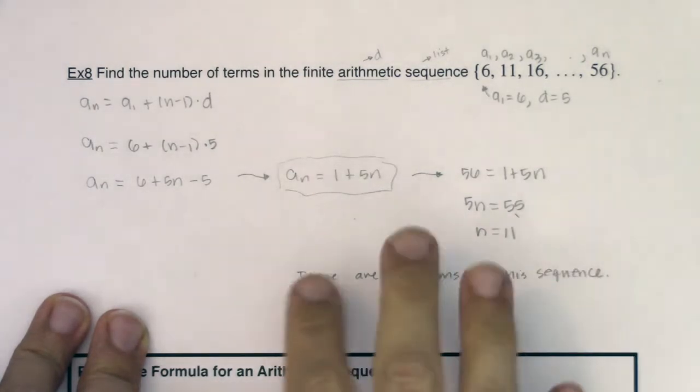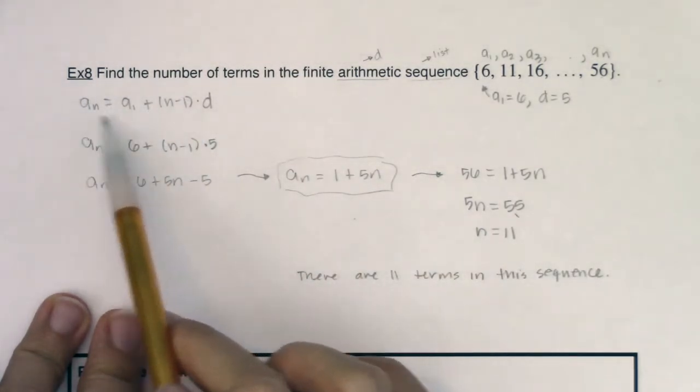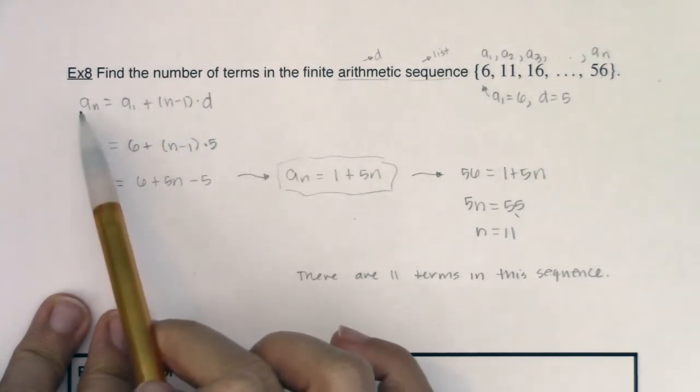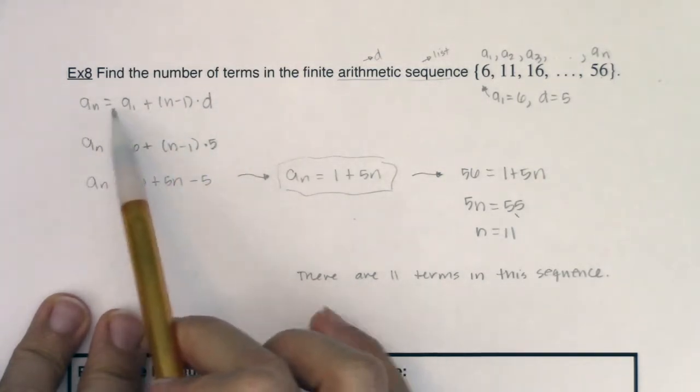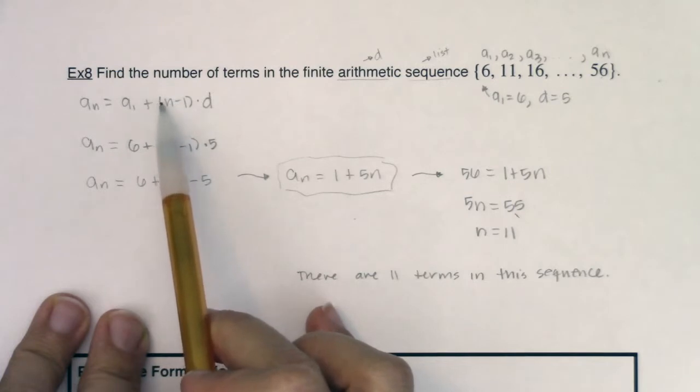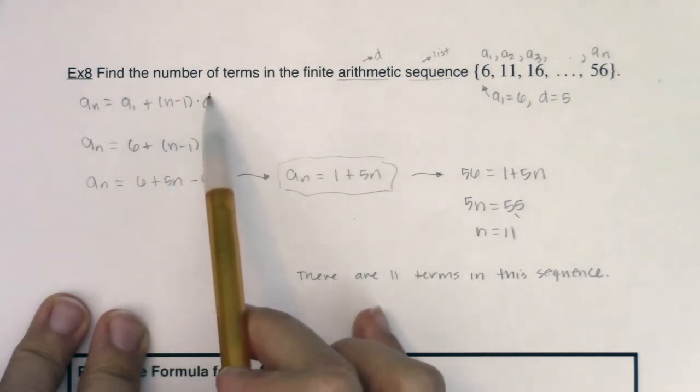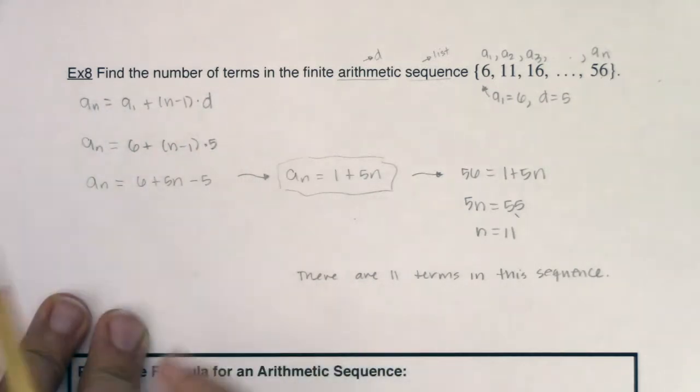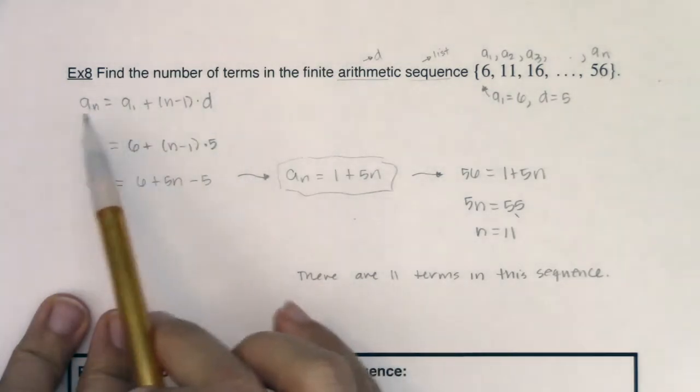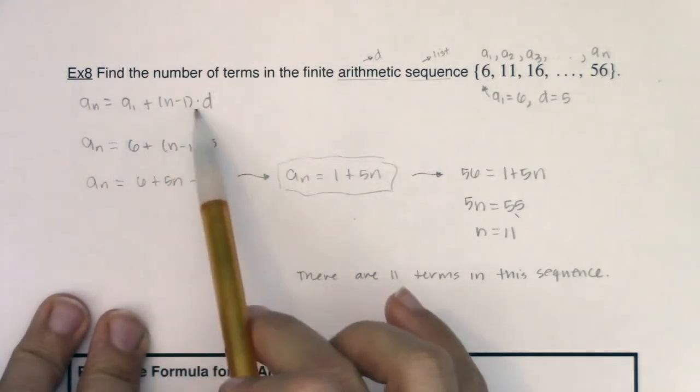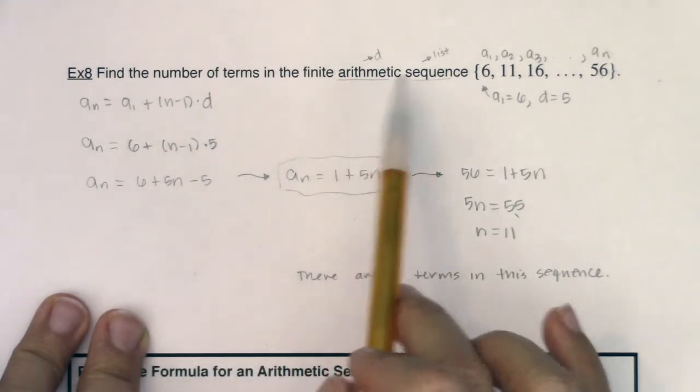So we have used this nth term for the arithmetic sequence formula in all sorts of ways. Just now we solved for n. We've talked about how you can solve for a sub 1 if you need to, how you can solve for d, and how you can solve for a sub n. So we really want to make sure we know how to manipulate this formula, which you can use whenever you have an arithmetic sequence.